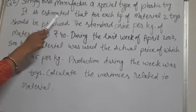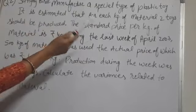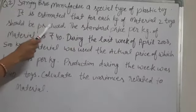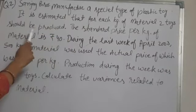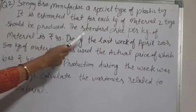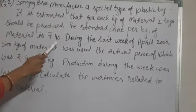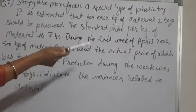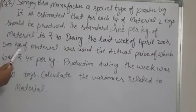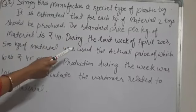Sanjay Brothers manufacture a special type of plastic toy. It is estimated that for each kilogram of material, two toys should be produced. The standard price per kilogram of material is Rs. 40, its SP is given. During the last week of April 2003, 500 kilograms of material was used.